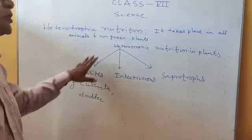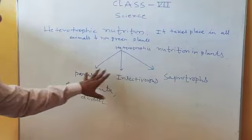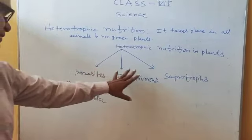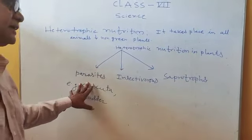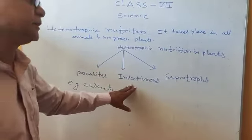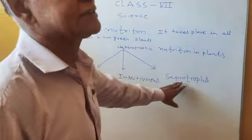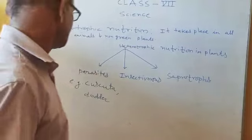Heterotrophic nutrition in plants is of three kinds: parasitic, insectivorous, and saprotrophic.